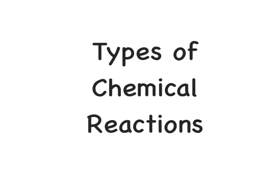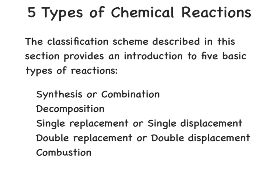In this screencast, we will look at the five types of chemical reactions. The five types of chemical reactions are synthesis or combination, decomposition, single replacement or single displacement, double replacement or double displacement, and combustion. We're going to be looking at some key identifiers to help us determine what type of reaction we're working with, and we're also going to look at some real chemical reaction examples.